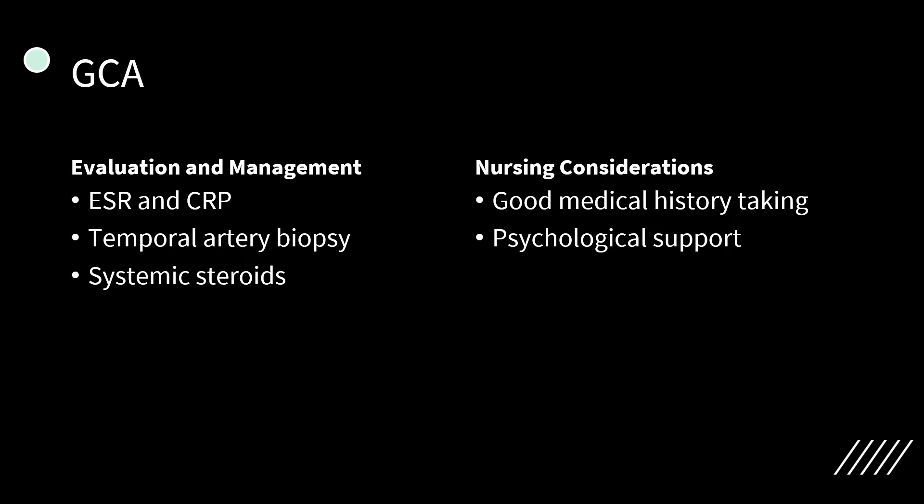GCA diagnosis is based on the clinical picture, erythrocyte sedimentation rate, and C-reactive protein, which may be elevated. A temporal biopsy is needed for a definitive diagnosis. Treatment consists of systemic steroids; initial high-dose prednisone is subsequently tapered over one to two years. Nursing considerations include taking a thorough medical history, which is crucial for diagnosis. The prognosis is generally poor if untreated, and patients may require psychological support.